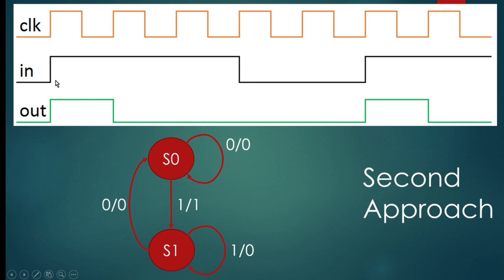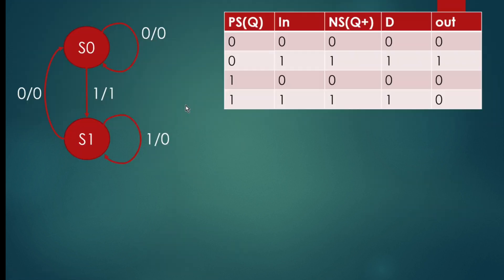In S1, if input remains high, we stay in S1 - because if we moved back to S0 we would see input as one again and generate another pulse, creating a continuous train of pulses. But that is not the requirement: for each positive edge of the input signal we need only one pulse. So we stay in S1 until input goes low, then return to S0.